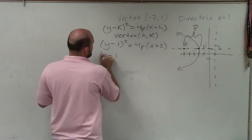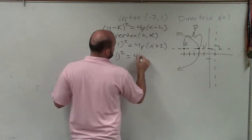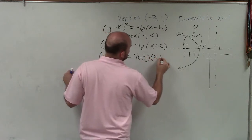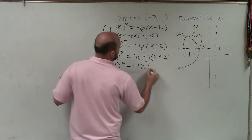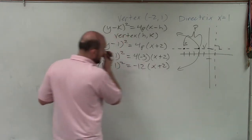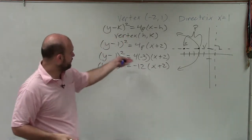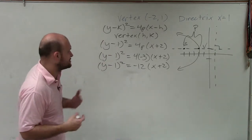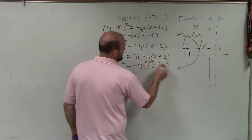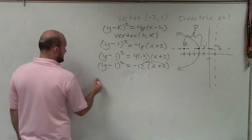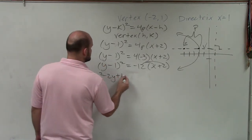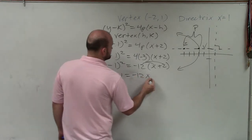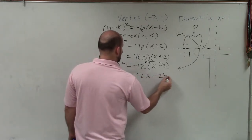So I have y minus 1 squared equals 4 times negative 3 times x plus 2. Now, I simplify that. y minus 1 squared equals negative 12 times x plus 2. Now, I'm going to want to solve for x. So to do that, I'm going to have to apply distributive property here. And I'm going to want to expand this. So I get y squared minus 2y plus 1 equals negative 12x minus 24.